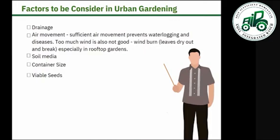The next factor is air movement. Sufficient air movement prevents waterlogging and diseases. Too much wind is also not good — it burns leaves, dries them out, and causes breakage, especially on rooftops.